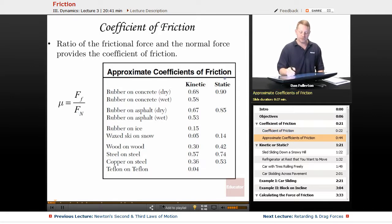So some approximate coefficients of friction for different types of friction. Kinetic friction is objects that are sliding against each other. Static friction is objects that are not sliding against each other. So rubber on dry concrete, for example, has a kinetic coefficient of 0.68 and a static coefficient of 0.9.